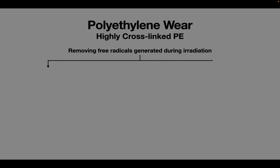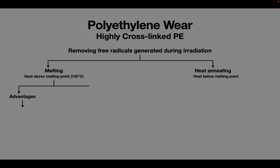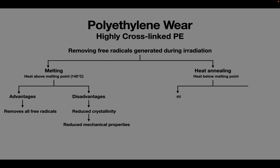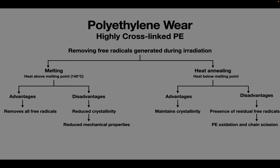Melting is heating the polyethylene above its melting point and heat annealing is heating it below its melting point. The main advantage of melting is that we can remove almost all the free radicals. However, melting can also reduce the crystallinity, and reduced crystallinity reduces the mechanical properties of the polyethylene. Heat annealing on the other hand maintains the crystallinity, but it may not remove all the oxygen-derived free radicals, requiring multiple cycles of heat annealing. Many modern highly cross-linked polyethylenes are manufactured by ram bar extrusion without additives, cross-linked with high-dose irradiation, ETO sterilization, and stored in inert gases.